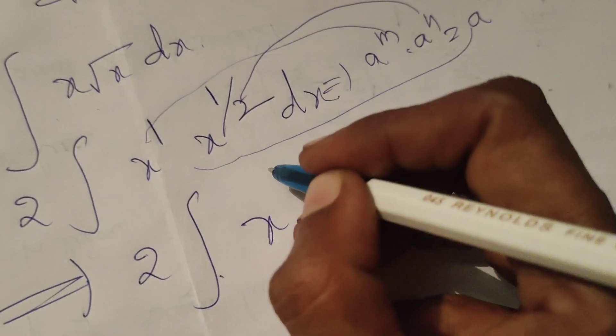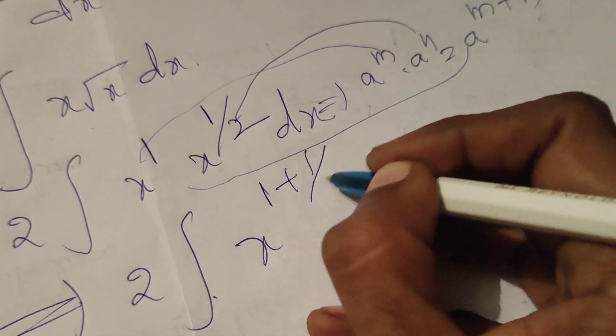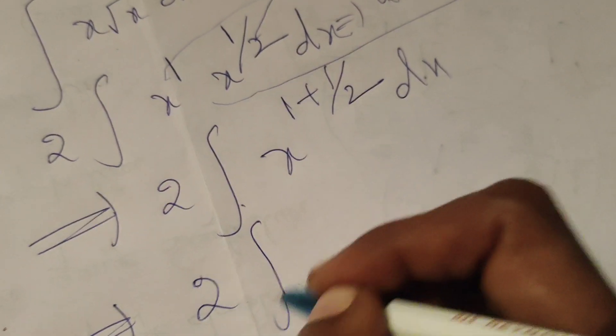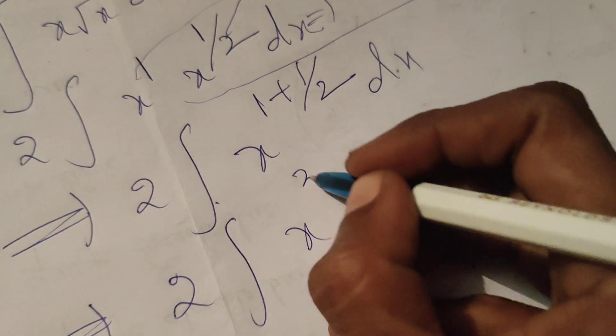Now x power 1 plus 1 by 2 dx. That implies 2 integral of x power 3 by 2 dx.